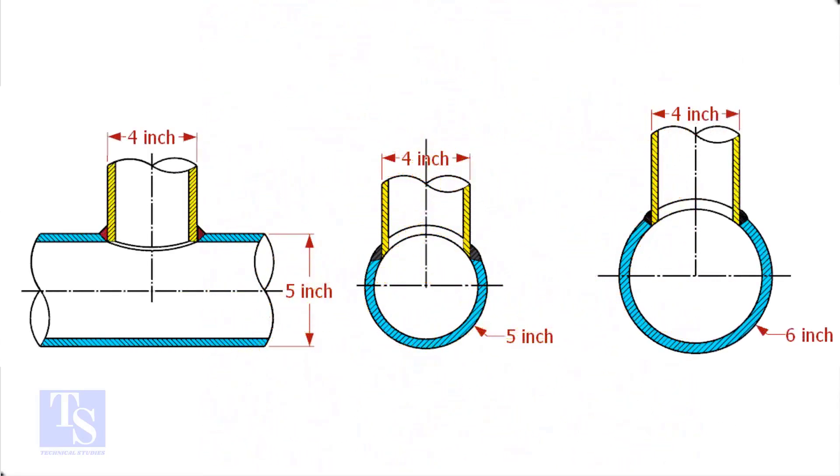In the case of stub-in connections, the branch pipe size is one or more units less than the header size. Suppose both the header and the branch size are the same, a stub-in connection is not possible.